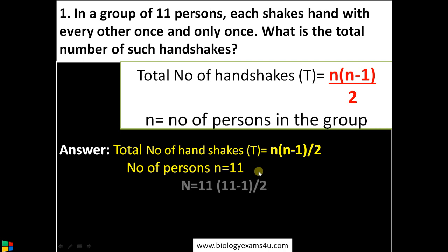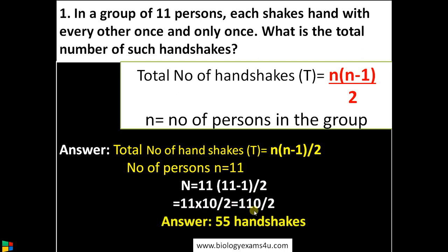Now substituting the value in the equation, total number of handshakes is equal to 11 into 11 minus 1 by 2, that is 11 into 10 by 2, that is 110 by 2, and the answer is 55 handshakes. Very simple equation to find the solution.